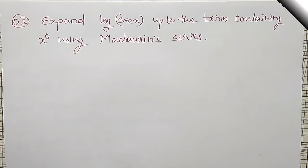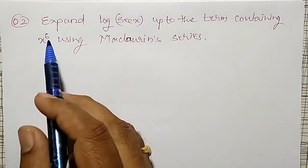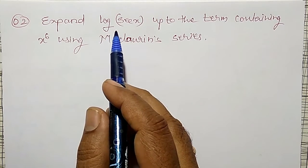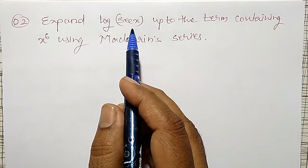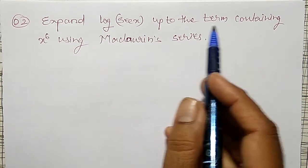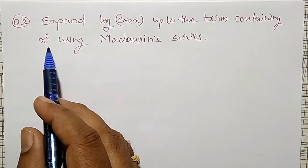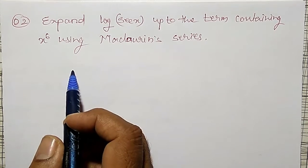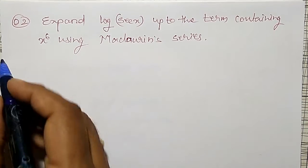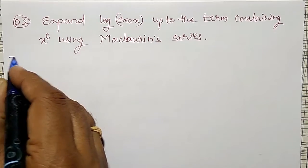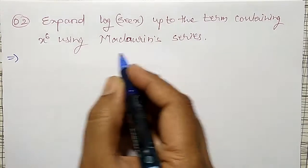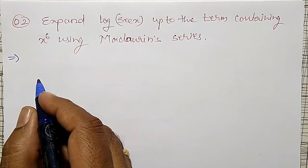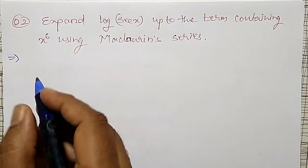In this video, I am going to expand log of secant x up to the term containing x to the power 6 using Maclaurin's series. Let me write the Maclaurin's series first.